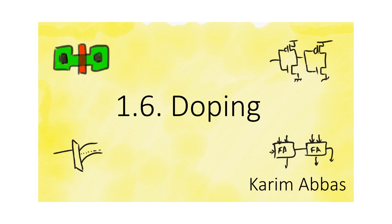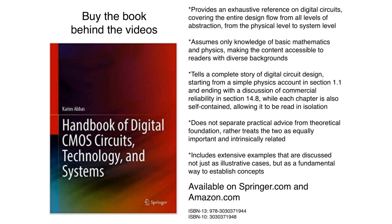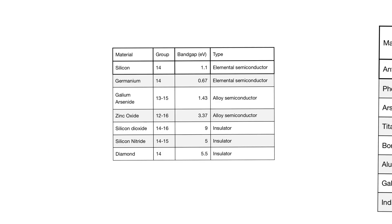So far we have been discussing pure or intrinsic silicon. Now it's time to start adding impurities. When we looked at semiconductors and compared them to insulators, we said that the most important difference between them is the amount of energy in the band gap.